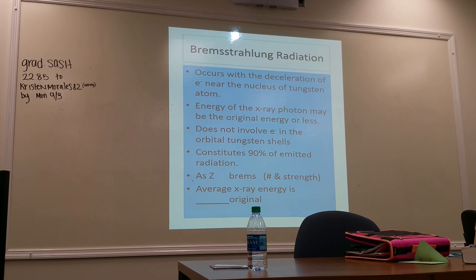To summarize: deceleration of electrons produces Brems radiation, and it constitutes the majority of that one percent of x-ray production coming out of the x-ray tube.